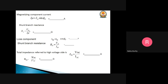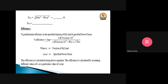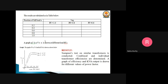The shunt branch reactance is X0 = V0 / Iμ, and the shunt branch resistance is R0 = V0 / IW. The total impedance referred to the high voltage side is Zeq = VSC / ISC. The equivalent resistance Req = WC / ISC², and the equivalent reactance Xeq = √(Zeq² − Req²). These values are used to calculate efficiency for different fractions of load: 0.2, 0.4, 0.6, 0.8, and 1.0, and for power factors of 1, 0.8, and 0.6, which are then plotted as a graph.